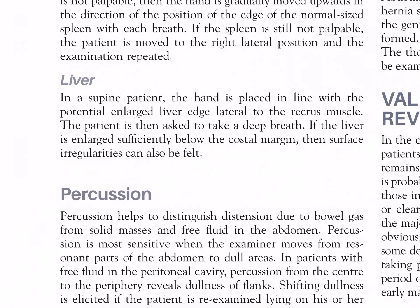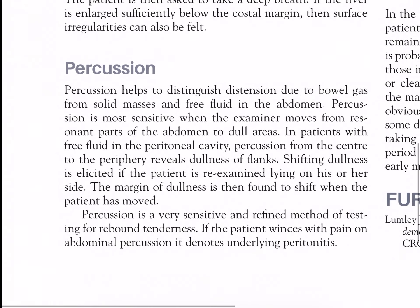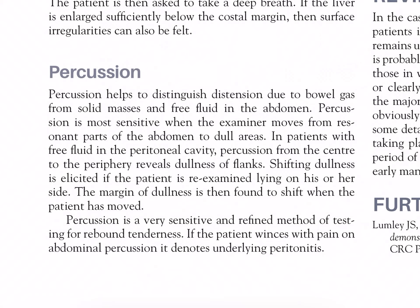Liver: in a supine patient, the hand is placed in line with the potentially enlarged liver edge lateral to the rectus muscle. The patient is then asked to take a deep breath. If the liver is enlarged sufficiently below the costal margin, surface irregularities can also be felt. Percussion helps to distinguish distension due to bowel gas from solid masses and free fluid in the abdomen. Percussion is most sensitive when the examiner moves from resonant parts of the abdomen to dull areas. In patients with free fluid in the peritoneal cavity, percussion from the center to the periphery reveals dullness of the flanks. Shifting dullness is elicited when the patient is re-examined lying on his or her side — the margin of dullness is then found to shift when the patient has moved. Percussion is a very sensitive method of testing rebound tenderness — if the patient winces with pain on abdominal percussion, it denotes underlying peritonitis.